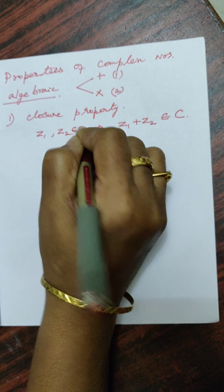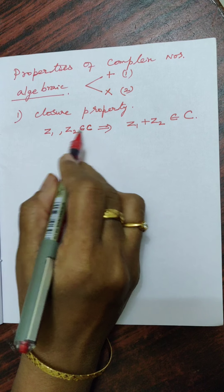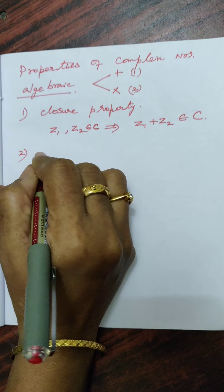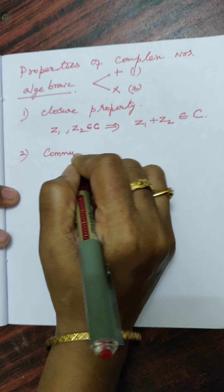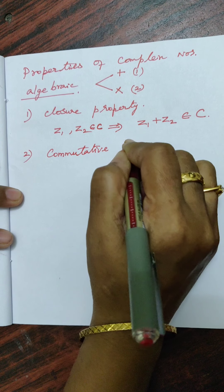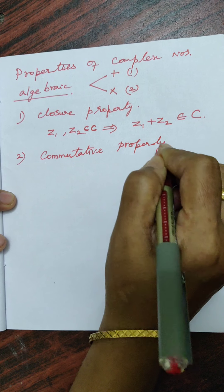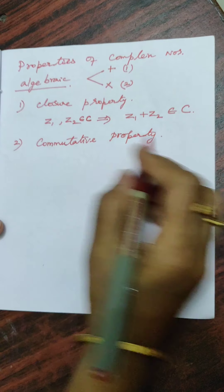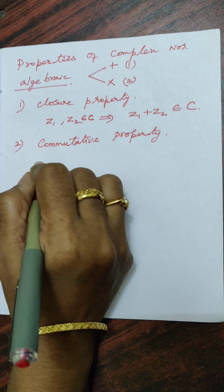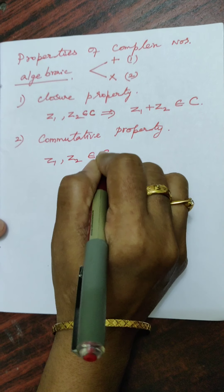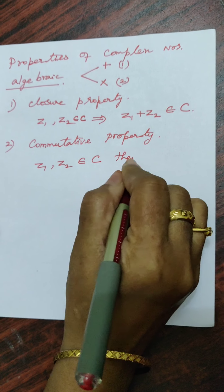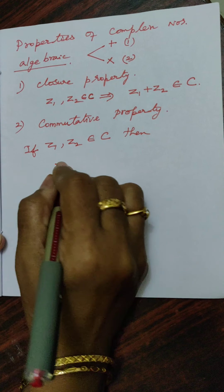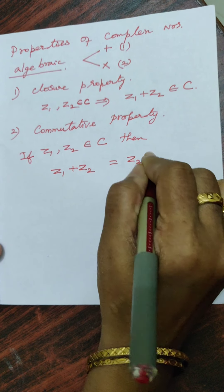Whatever complex numbers you take, their sum is also a complex number. The second property is Commutative property. For any Z1 and Z2 belonging to the complex numbers, Z1 plus Z2 equals Z2 plus Z1. This property is called Commutative property over addition.